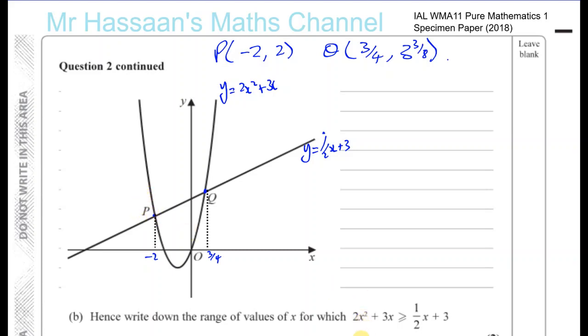When this is greater than the line, when x is less than minus 2, in this region here the curve is going to be above the line. When x is greater than minus 2, the curve is below the line. So this inequality will be false in this region here.